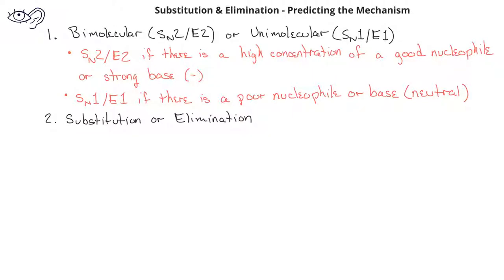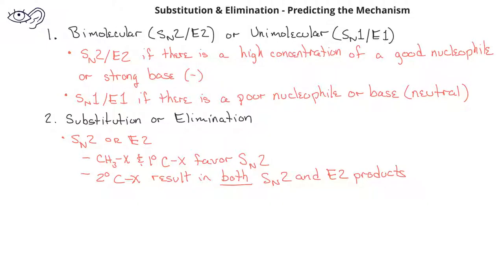When we're deciding between SN2 or E2, if we have a methyl halide or a primary alkyl halide, those types of reactants will favor an SN2 mechanism. If we have a secondary alkyl halide, you'll get both the substitution and the elimination products. If you have a tertiary alkyl halide, you'll only get the E2 product since SN2 reactions do not take place for tertiary alkyl halides.